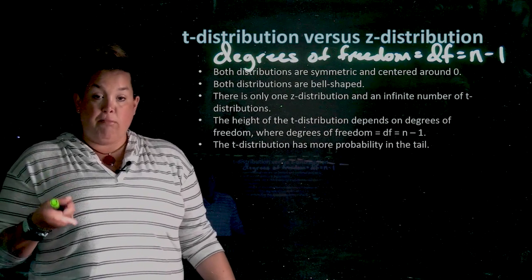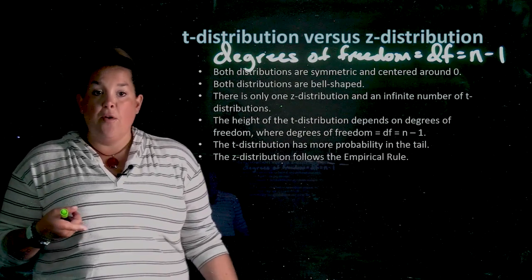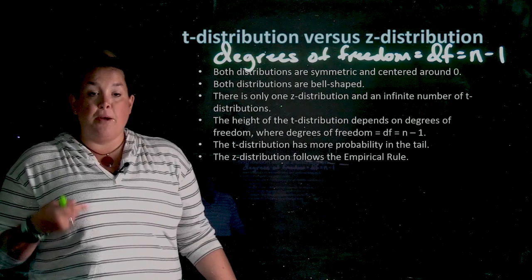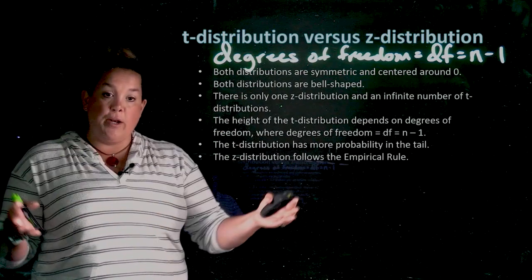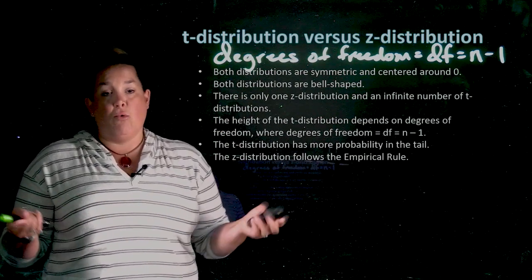The t-distribution has more probability in the tail, which we saw. And the z-distribution, because there's only one, it also follows the empirical rule.